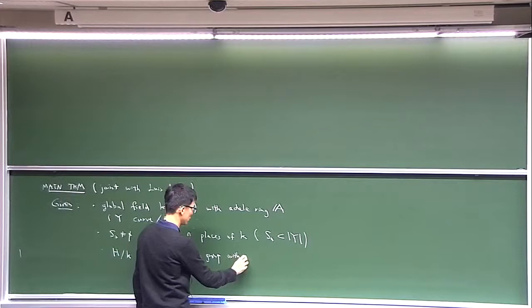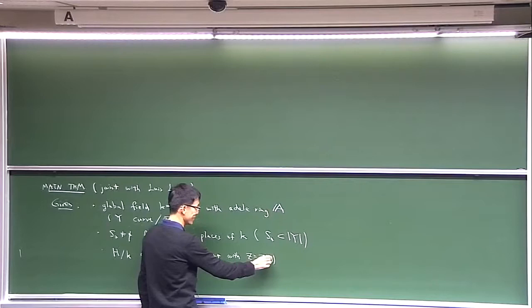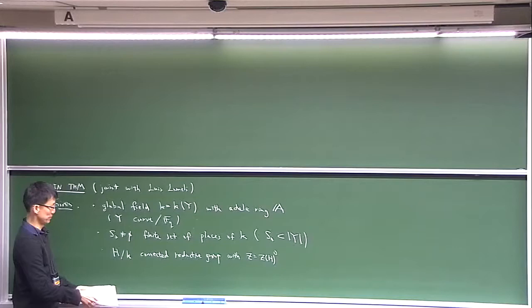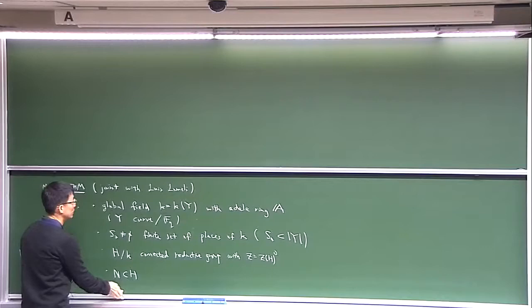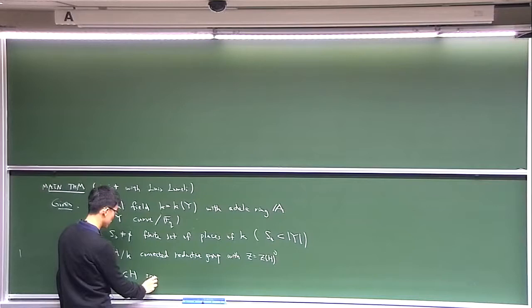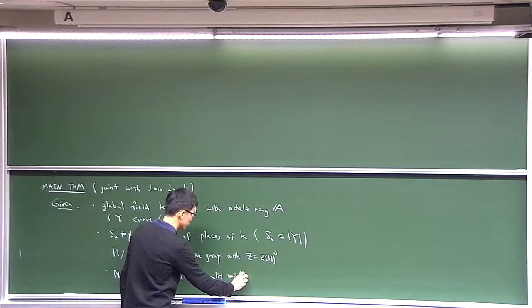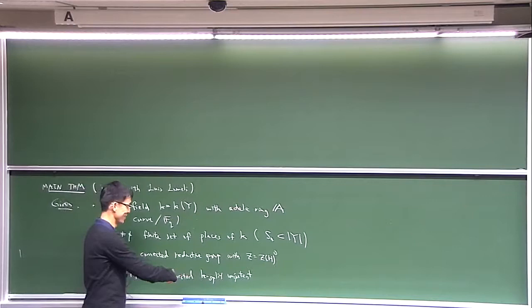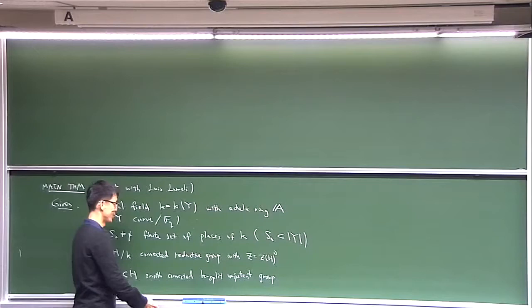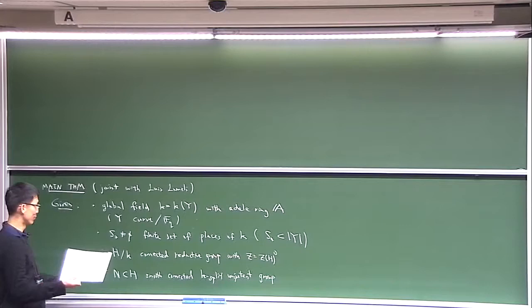I'm given a connected reductive group H over k. Let me denote the center Z_H and then the identity component of the center Z, which is a torus. I have N in H, a smooth, connected, k-split unipotent subgroup. At the end of last time I gave some examples to illustrate that if you don't put this condition, especially k-split, you can have rather nasty unipotent subgroups, and I want to avoid those.